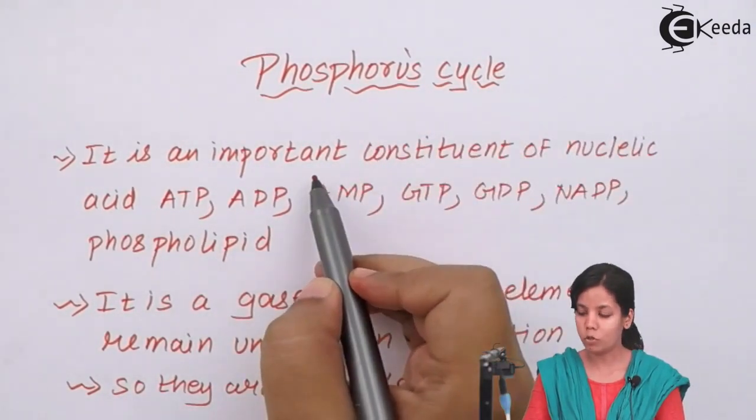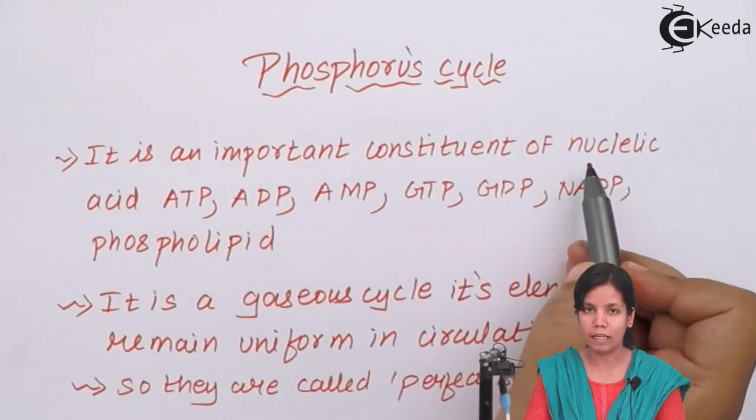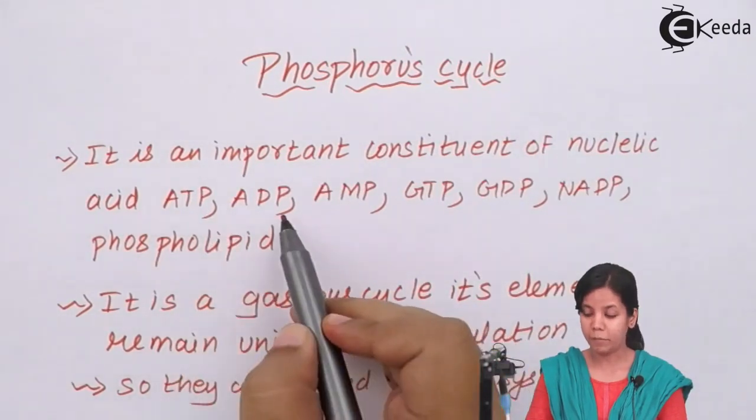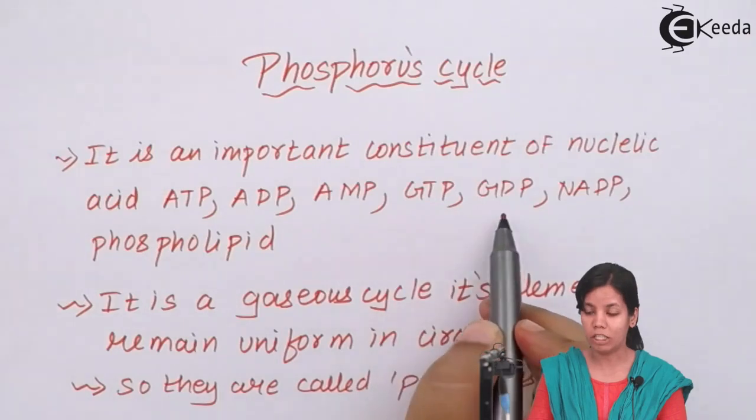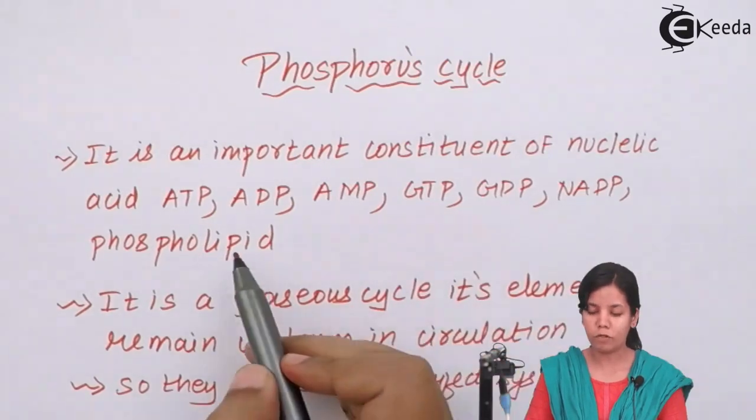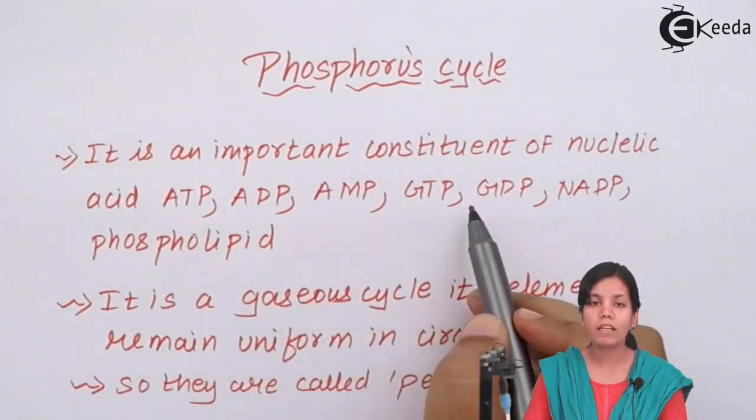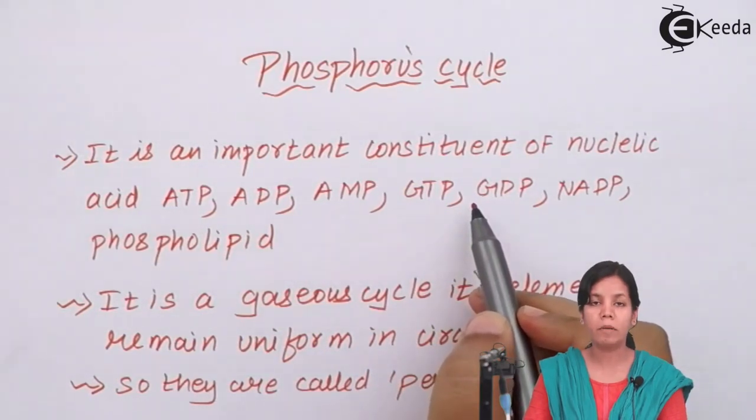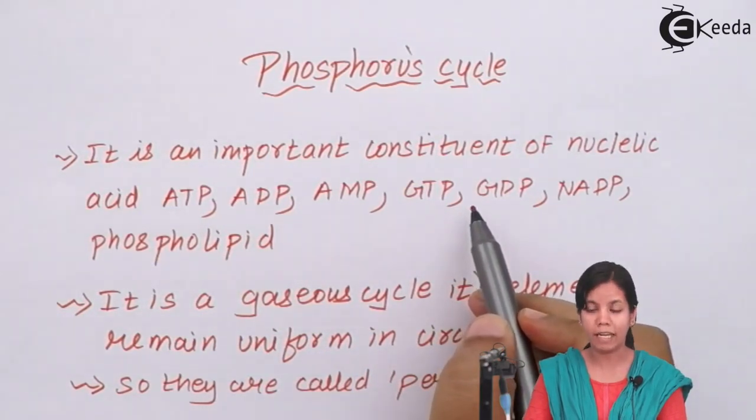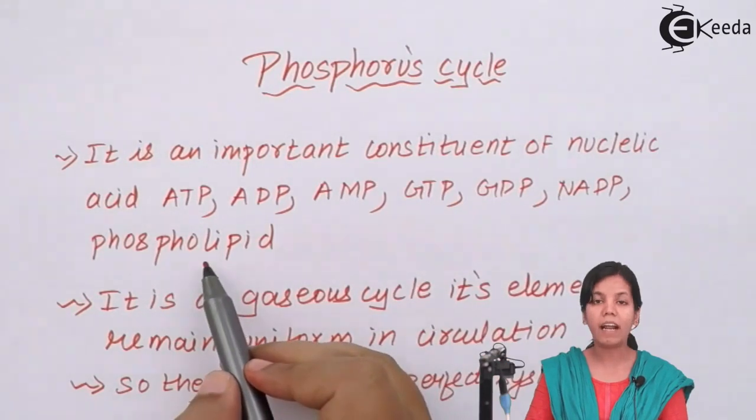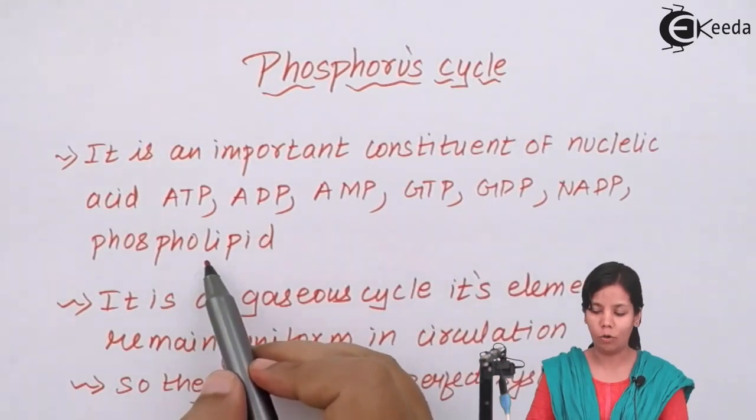Phosphorus is an important constituent of nucleic acid or DNA, ATP, ADP, AMP, GTP, GDP, NADP, and phospholipids. All these compounds are responsible for some or the other cycle. They form a major component of deoxyribose nucleic acid. And phospholipids are outer layer of a cell. You all know that.